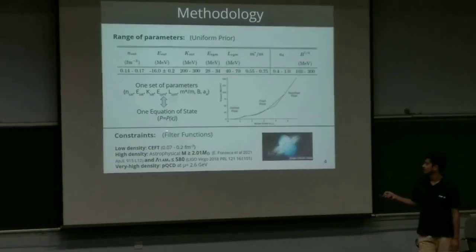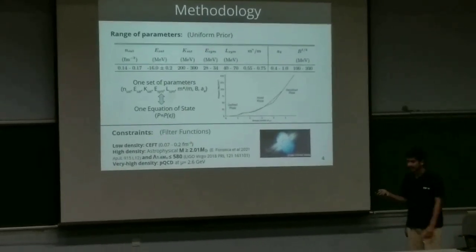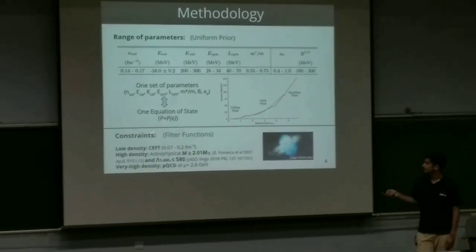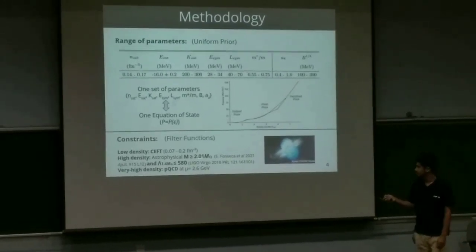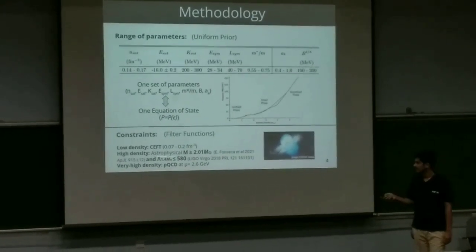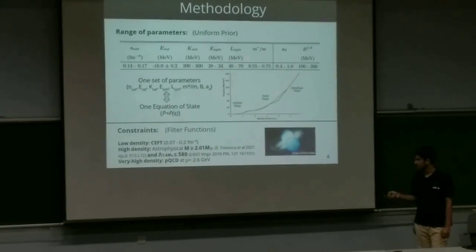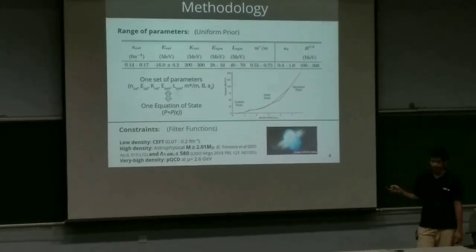Then we use constraints in the form of filter functions. At low densities, we have calculations from chiral effective field theory. At higher densities, we use two of the observations: maximum mass should be greater than about 2 solar mass, and the tidal deformability of 1.4 solar mass. And also, we add, at very high densities, calculations from perturbative QCD.